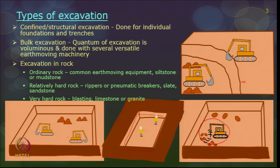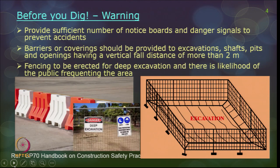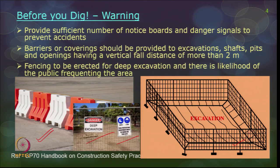Before you dig, you have to post warning messages to the public and prevent the public from entering the construction site. First, provide sufficient notice boards and danger signals to prevent accidents. Next, barriers — primarily obstacles or obstructions so the public is not intervening in the excavation work. These should be provided for any excavation shaft, pit, or opening having a vertical distance of more than 2 meters. Fencing is erected for deep excavation and when there is a likelihood of the public frequenting that area.